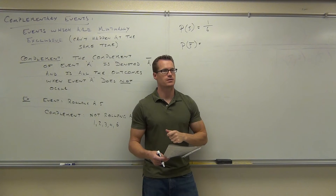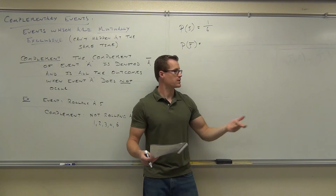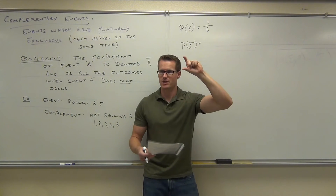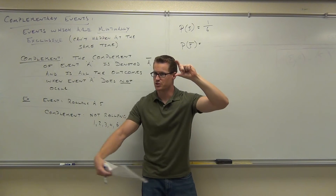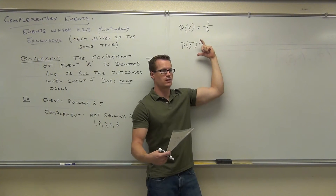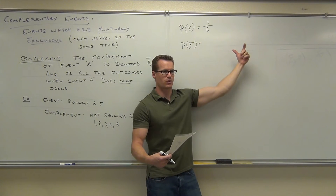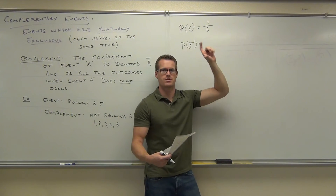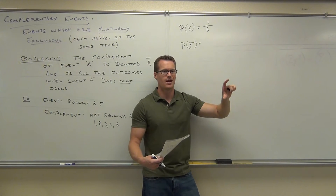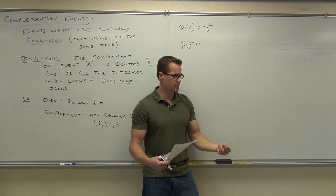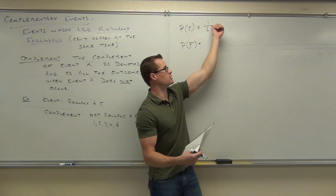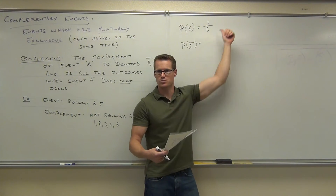One. Yes — if you add those probabilities, shouldn't you get one, which stands for 100% of everything? Because you're either here or here, you're not anywhere else. So if you add those probabilities together of the event plus the complement, that accounts for everything that could possibly happen.